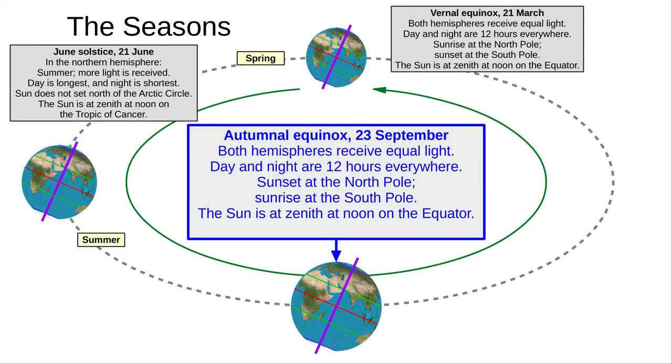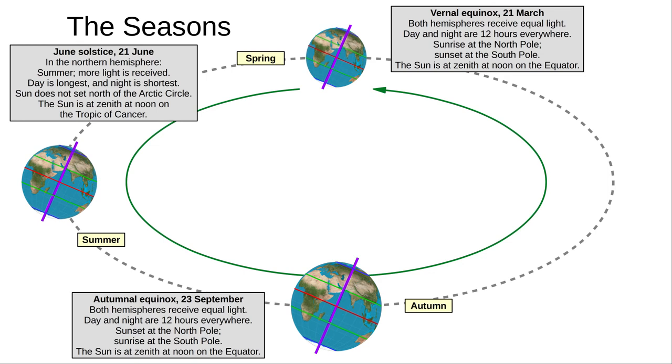On the 23rd of September, it's the autumnal equinox. The 23rd isn't a typo. It would be nice if all of these were on the 21st of the month, but our human calendars, combined with leap years and our elliptical orbit, make things a bit messy sometimes. Just like the vernal equinox, day and night are 12 hours everywhere, and both hemispheres receive an equal amount of light. The sun sets at the North Pole and rises at the South Pole and is at zenith at noon on the equator. In the sky, the sun is in the first point of Libra. This, of course, is the first day of autumn.